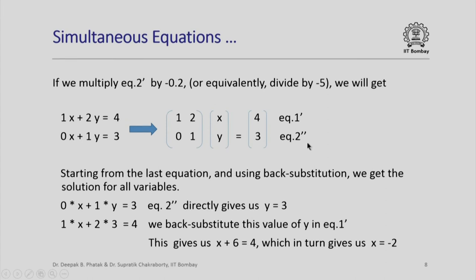Now you will observe the importance of all the operations that we have done. Notice that these two equations can be looked backward. First we look at the last equation, 0 into x plus 1 into y equal to 3, this directly gives us the value of y as 3. Next we use this value of y equal to 3 and substitute it in this equation, 1 into x plus 2 into 3 equal to 4. This is called the back substitution. This gives us x plus 6 equal to 4 which in turn gives us the solution x equal to minus 2.